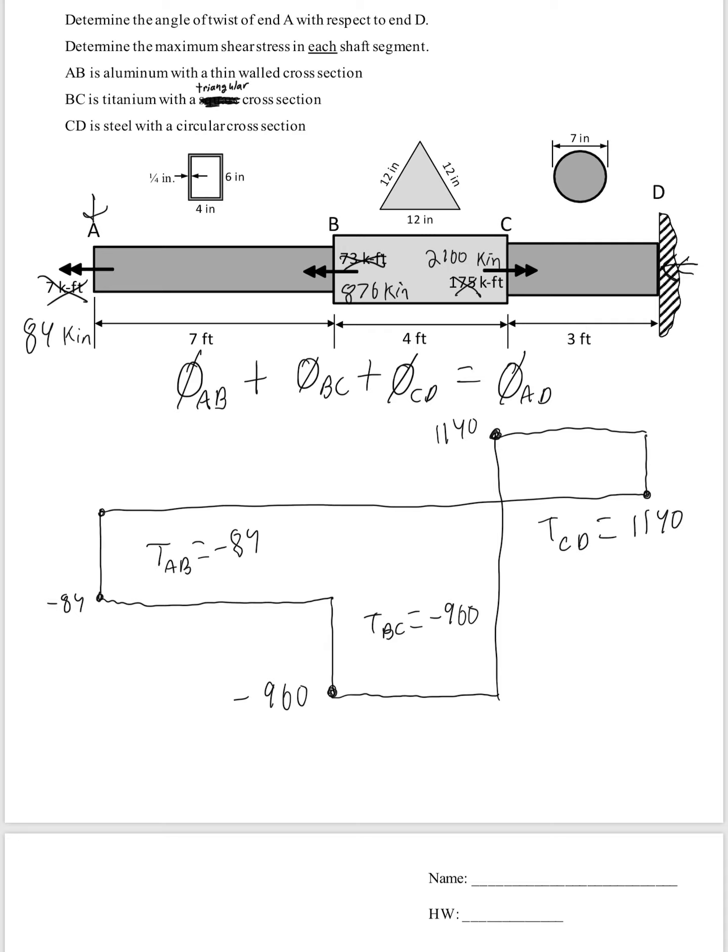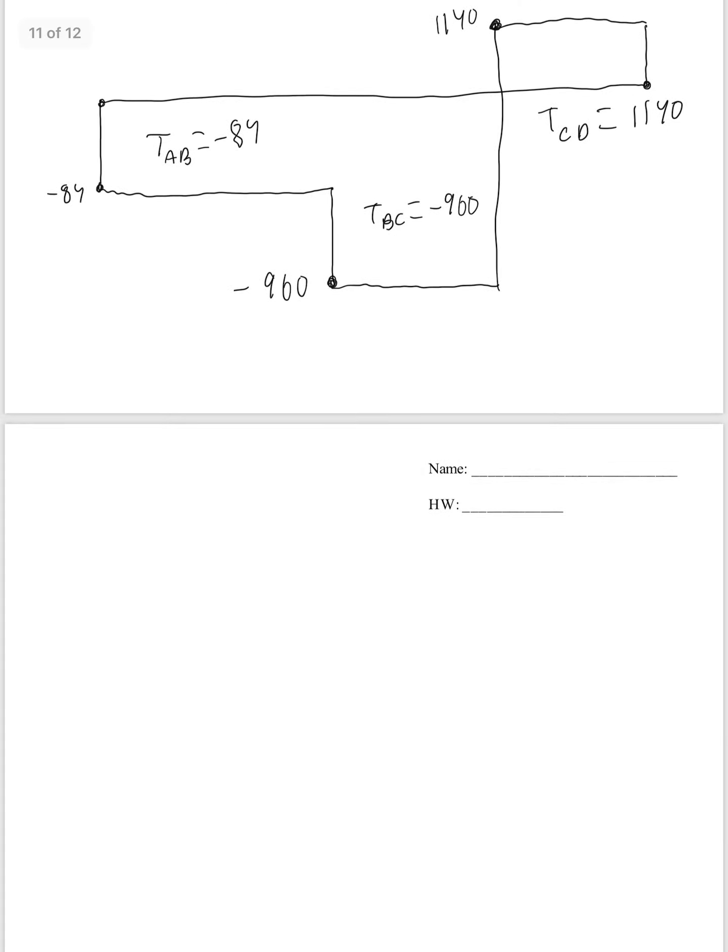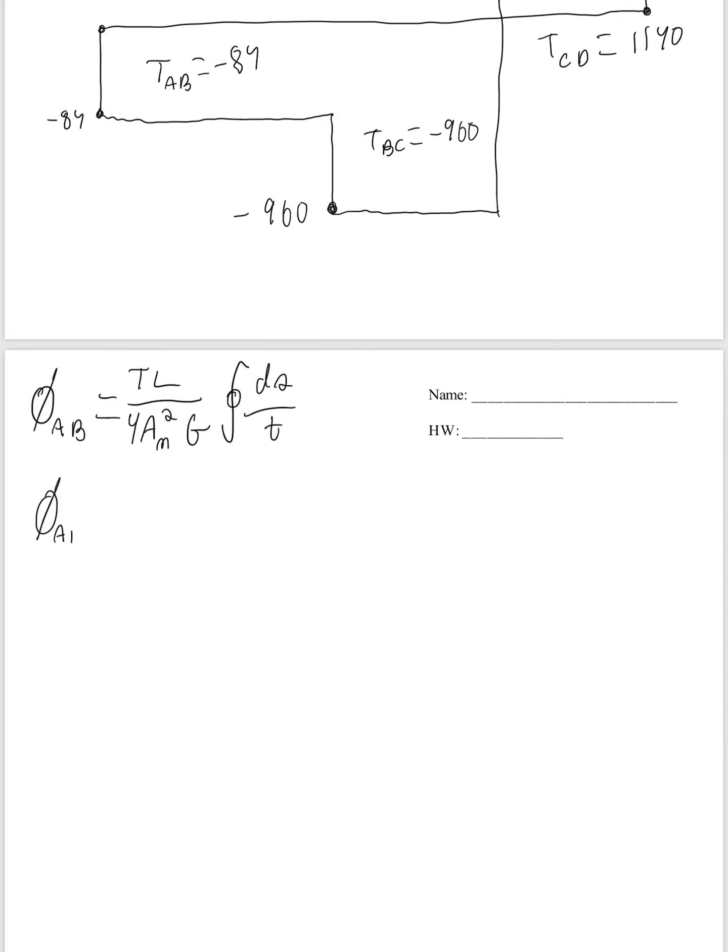So let's start with AB. So angle of twist of AB, or for any thin wall section, is TL over 4 times the area mean squared times G times the path integral of DS over the thickness. But we're going to write that for any known shape. It's really just TL over 4, area mean squared, G times the mean perimeter over thickness.